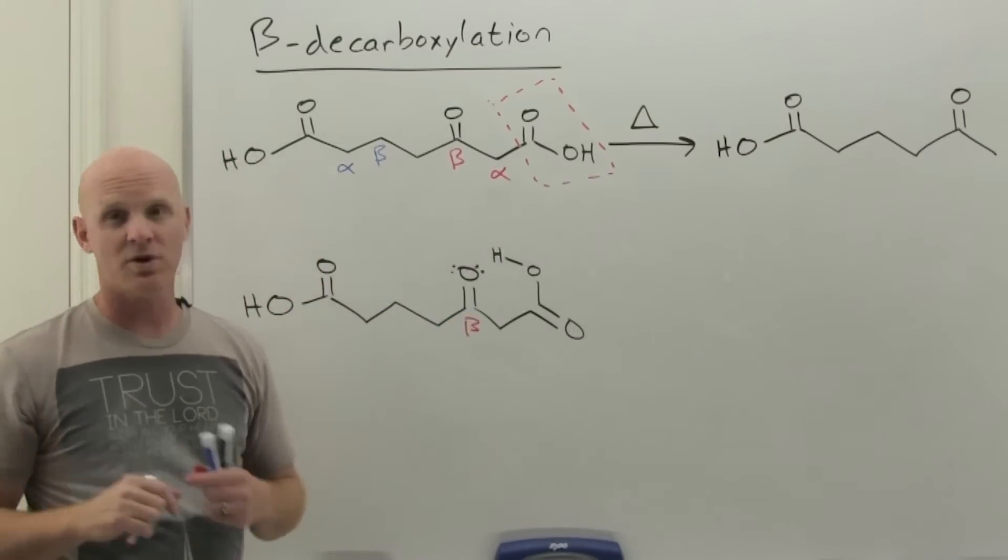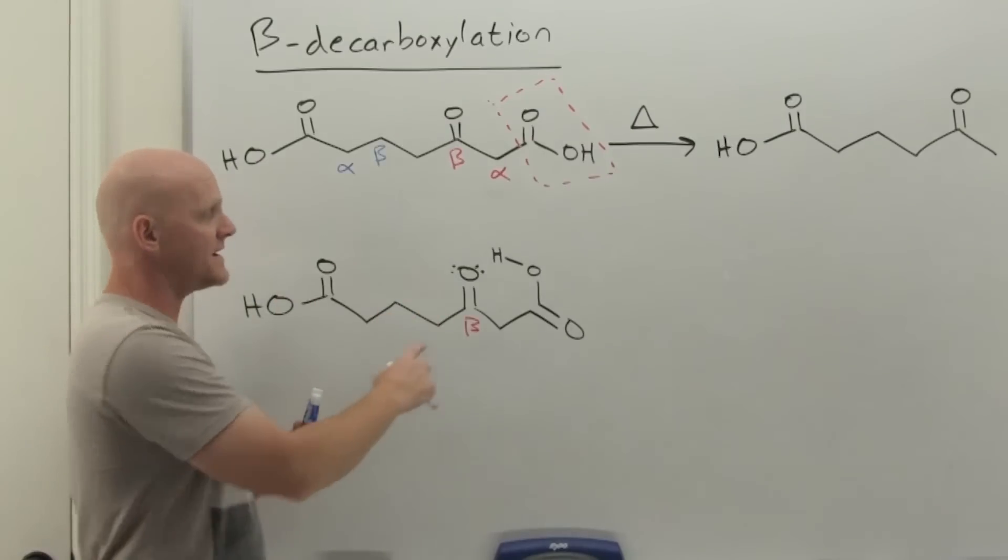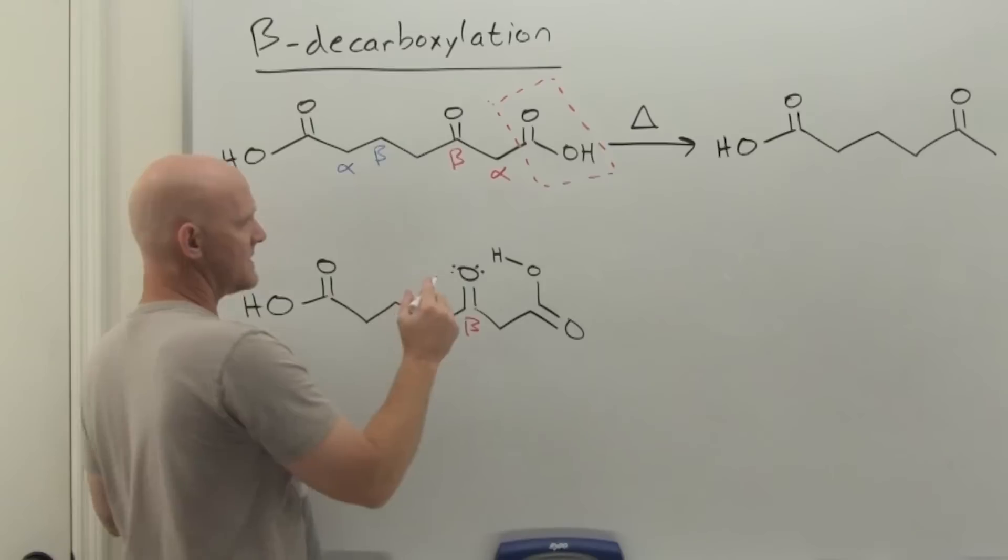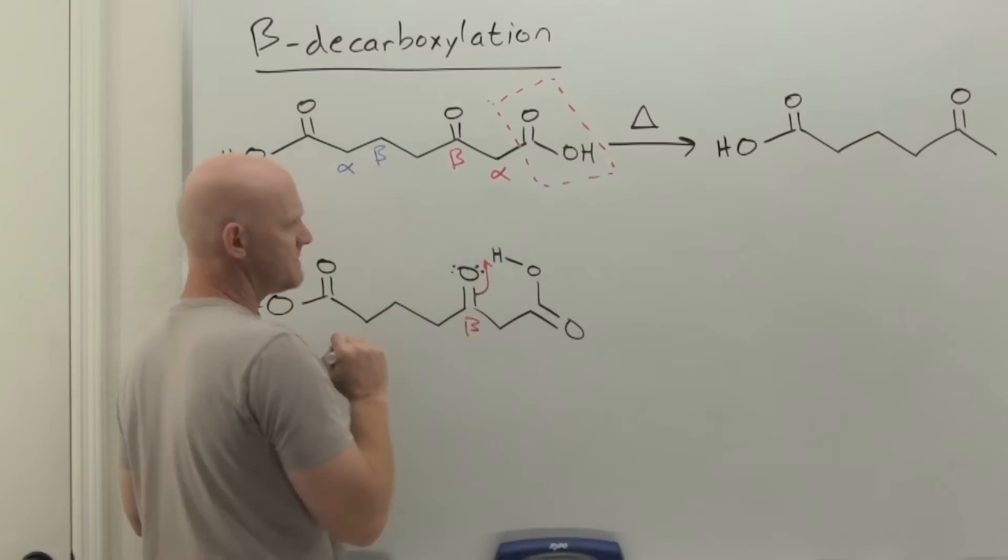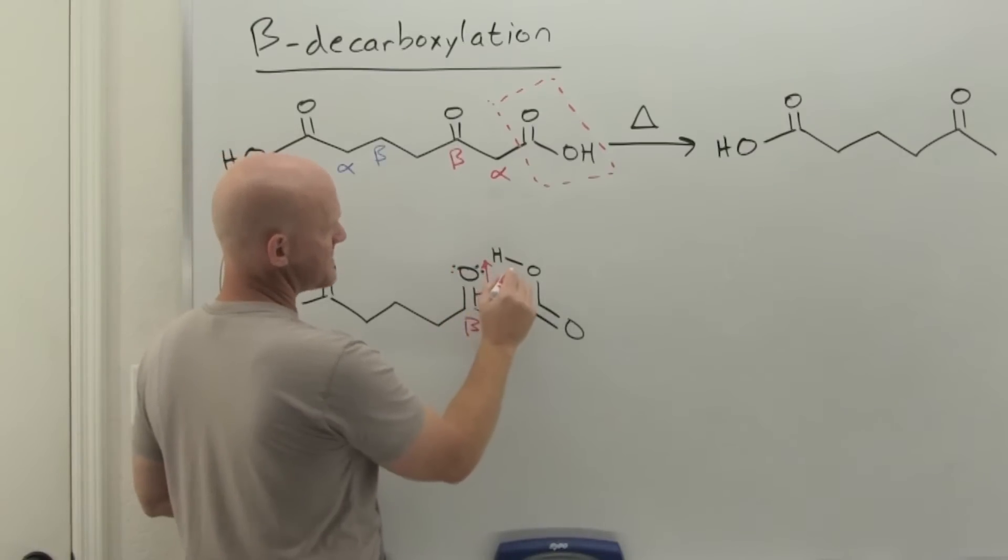That only happens if that carbonyl group is beta, not if it's alpha, not if it's gamma or delta, only if it's beta and it's almost a quasi six membered ring. So what happens here is we're going to come and deprotonate that hydrogen with the oxygen using the pi electrons here.